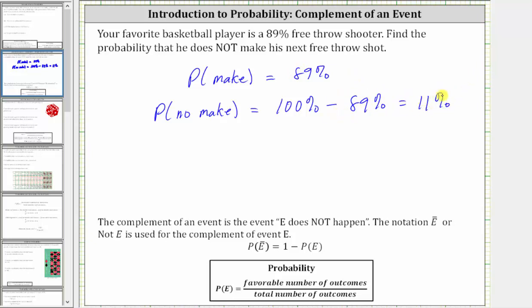The probability he will not make the next free throw is 11%. And we call the event that he will not make the next free throw the complement of the event that he will make the next free throw.